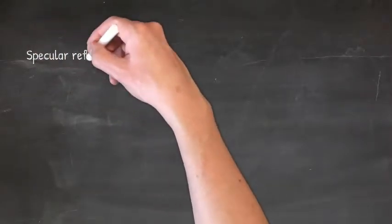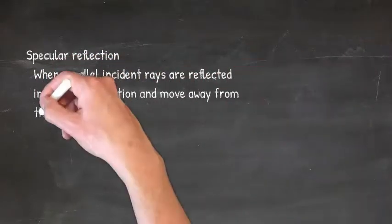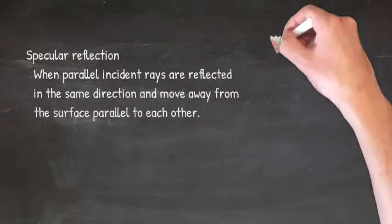There are two types of reflection you must know about. Firstly, specular reflection. This is when parallel incident rays are reflected in the same direction and move away from the surface parallel to each other.